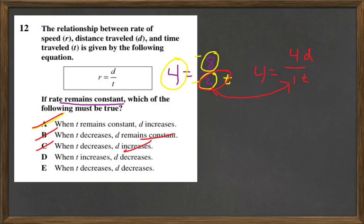D: When T increases, D decreases. So let's go the opposite direction. T increased, goes from 1 to 2. So what happened to the distance? It went from 4 to 8. It went up. It did not decrease. So that can't be it.